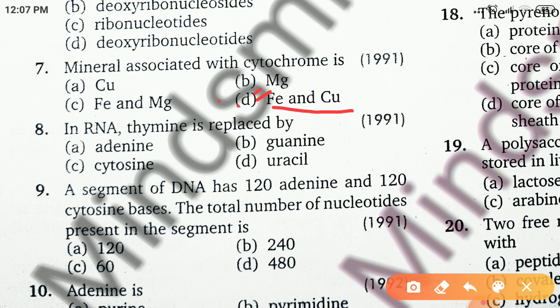In RNA, thymine is replaced by — the right answer is uracil. In RNA, thymine is replaced by uracil.